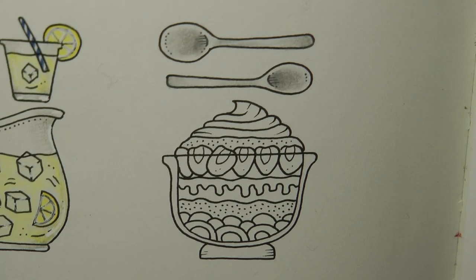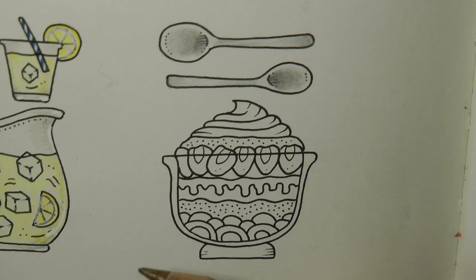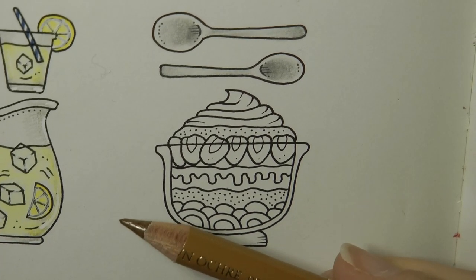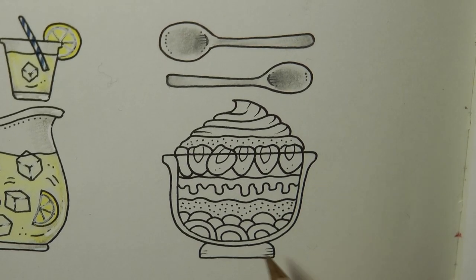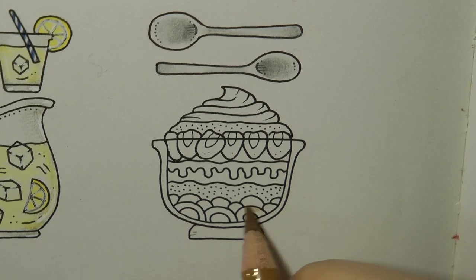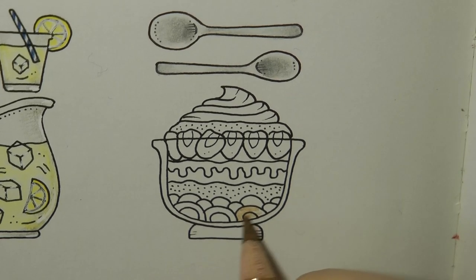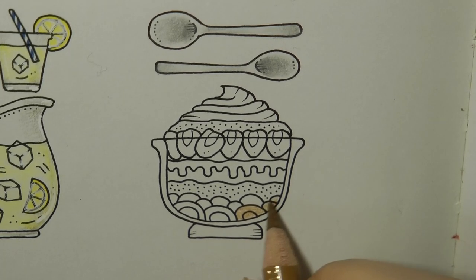Now our trifle. I think I'm just going to start at the bottom layer and work up. Now usually at the bottom layer of a trifle we will have some sponge, some sponge fingers. For people who don't know about trifles, if you're not from the UK, you may not. So we're going to use the brown ochre. We're using all our Polychromos today.